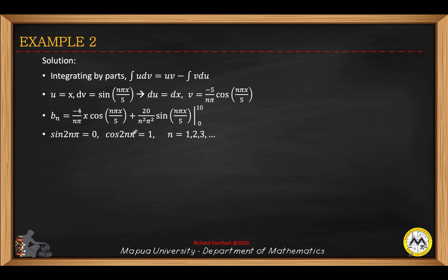Note that sine(2nπ) equals zero and cosine(2nπ) equals 1 for n equals 1, 2, 3, and so on. Substituting and applying sine(2nπ) equals zero and cosine(2nπ) equals 1, then substituting the limits and simplifying, you can verify that b sub n is equal to negative 40 over nπ.